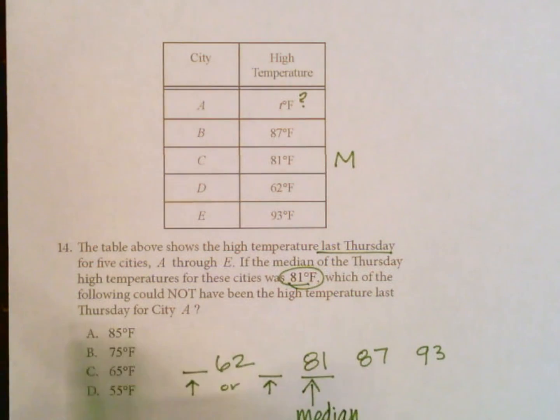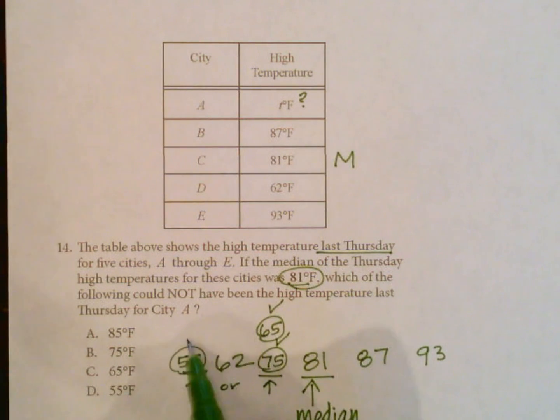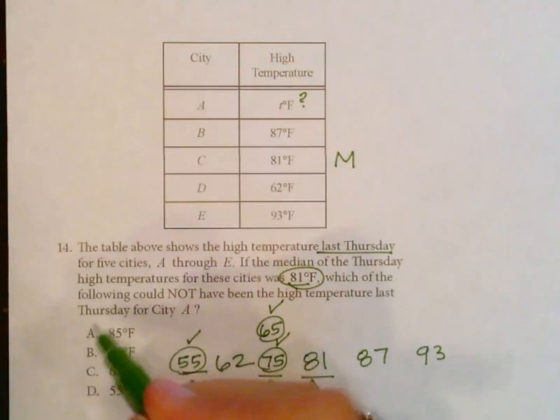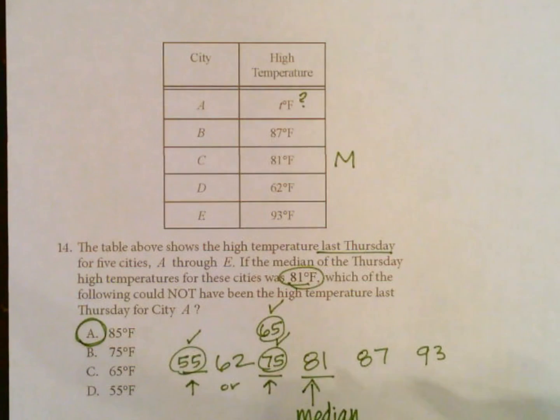Which could not have been a high temperature? So 85 would put this value over here, which would change our median. The median would become 85 if it was included, so it cannot be. So 85 is actually going to be our answer. But let's just check it: 75, that would fit here, so that would work. 65, that would also fit here and that would work. And 55, we could put that here and that would also work and keep this 81 as our median value. So the one that it could not be is 85 because that would change our median value.